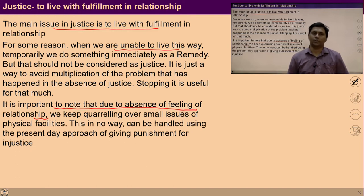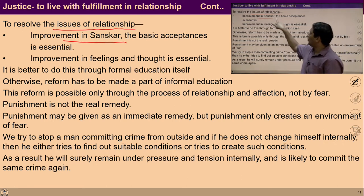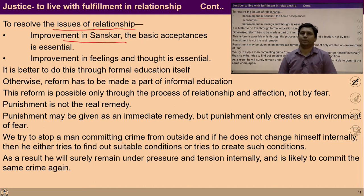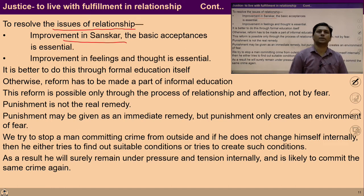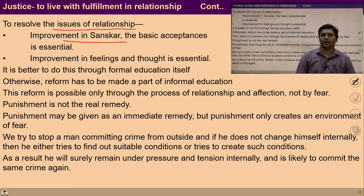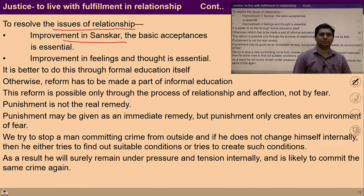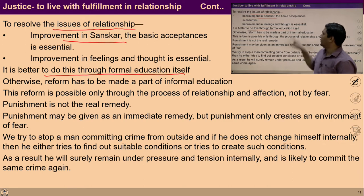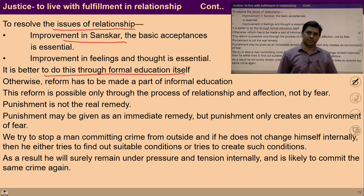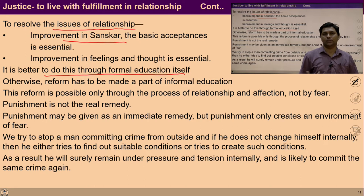Through reform education, we can ensure this feeling of relationship in the child. The behavioral issue is because of the sanskars, and improvement of sanskars is required and essential. Improvement in feeling and thoughts is essential, and ensuring resolution at the level of self is essential. It is better to address this through formal education itself — at the level of formal education, informal education, and at the level of policy through reform education — so that the ability to ensure justice in everyone may be ensured.